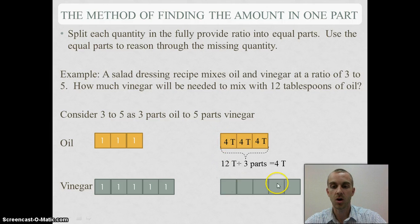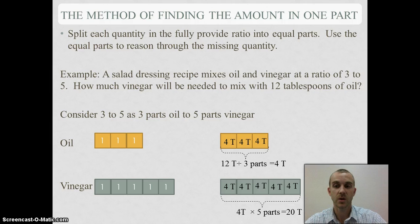Now since my parts are all equal, that means all 5 of these have to be 4 tablespoons as well. If I add them all together, or I could say 4 tablespoons times the 5 parts I have, gives me 20 tablespoons. So I would need 20 tablespoons of vinegar for 12 tablespoons of oil.